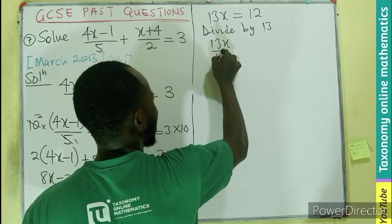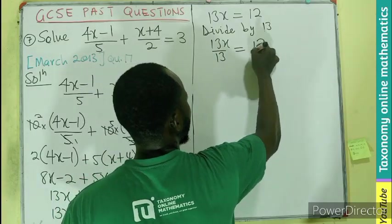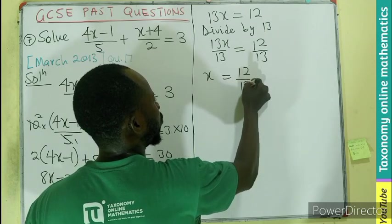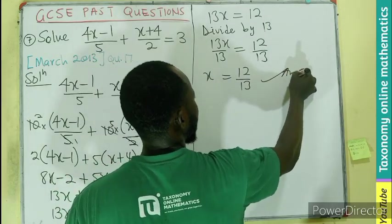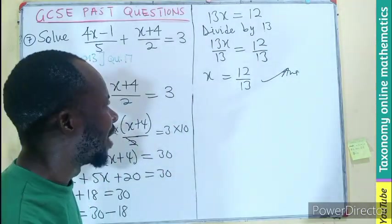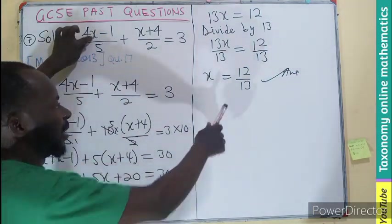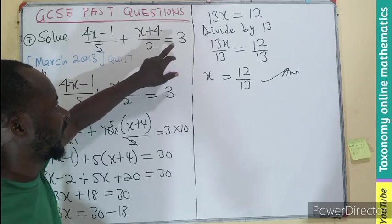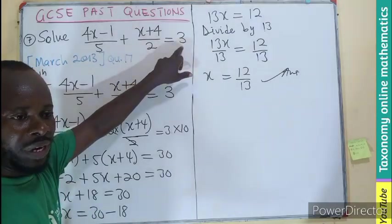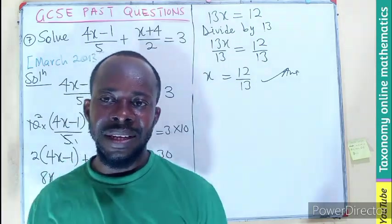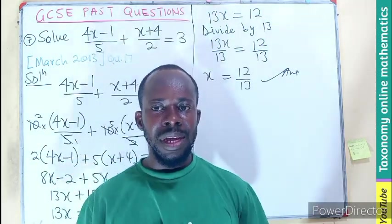Therefore, 13x divided by 13, 12 divided by 13, x becomes 12 over 13. So the value of x, which when substituted into this equation will give us the left side equal to 3, is 12 over 13. The concept is clear.